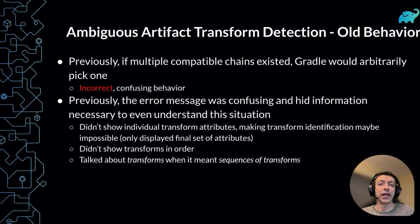Previously, in some cases, Gradle actually didn't fail when it should have. Sometimes when multiple distinct, potentially correct transformation chains existed, Gradle did just arbitrarily pick one. This is a problem because if a new artifact transform was later added to the project, Gradle may or may not silently switch to using it as part of a different selected chain of transforms, producing different artifacts for the same dependency resolution request and causing very difficult to understand and debug situations.